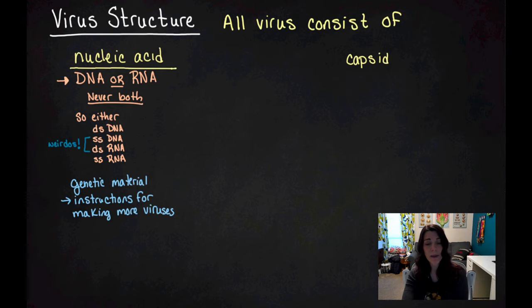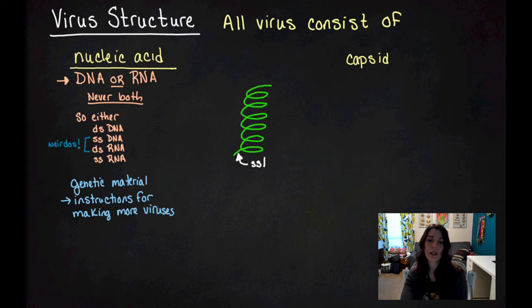The nucleic acid obviously contains the genetic material, and that's the information on how to make more viruses. But remember, the viruses can't make copies of themselves. They need a host cell. We're going to talk more in depth later about how viruses actually take over cells and make them make more copies of themselves, but that's not in this set of notes. That would be an example of a single-stranded piece of RNA, the nucleic acid of a virus.